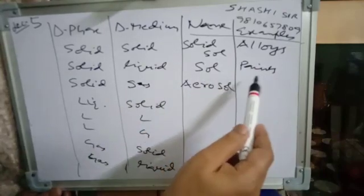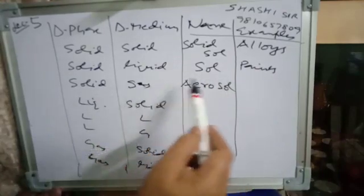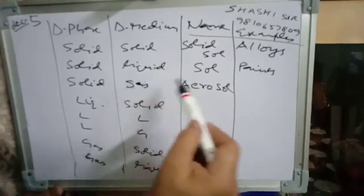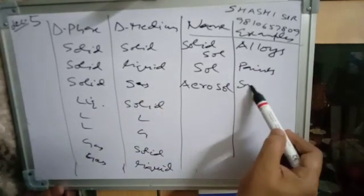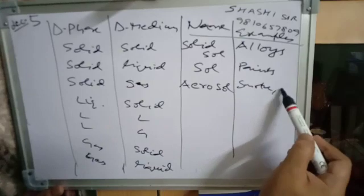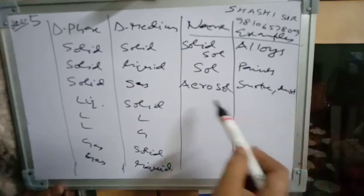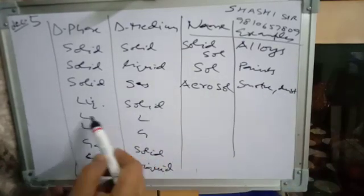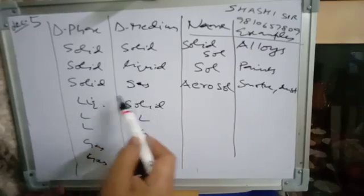Solid in solid (solid sol): examples are alloys and gemstones. Solid in liquid (sol): examples are paints. Solid in gas (aerosol): examples are smoke, dust, and storm or haze.